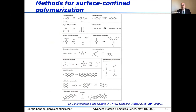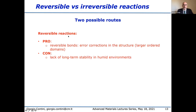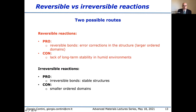Here is a scheme of different chemical reactions, which we can divide into two classes depending on the number of arrows. If we have only one arrow, the reaction is irreversible; if we have two arrows, the reaction is reversible. With reversible reactions, since the bonds are reversible we have error correction in bond formation and destruction, giving larger ordered domains. The con is the lack of stability in humid environments. With irreversible reactions, the main pro is that we have stable structures, which is very important for applications, but the con is that we obtain smaller ordered domains.